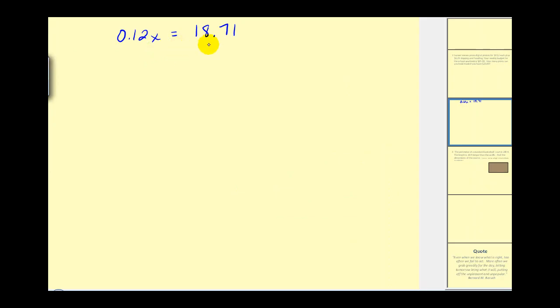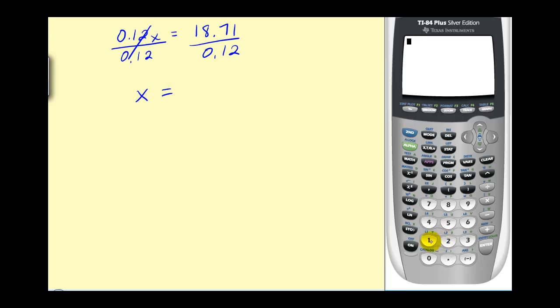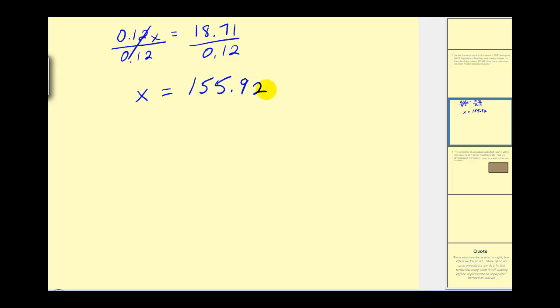So we have 0.12x equals 18.71. To solve for x here, we have to divide. So we'll divide by 0.12 on both sides. This would simplify to x equals, let's go ahead and get our graphing calculator out. So we can take 18.71 and divide by 0.12. So we have x is approximately 155.92. Remember that x was the number of prints. And of course, we cannot order a fraction of a print. So in this case, we would round down. And so our final answer would be 155 prints.